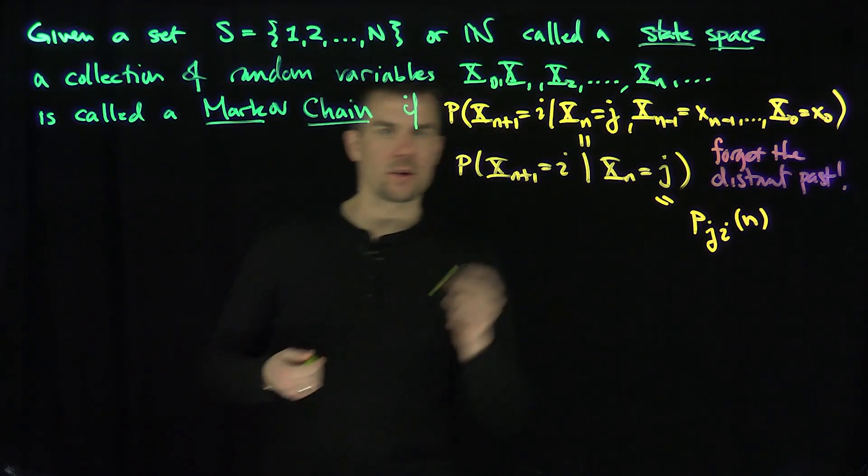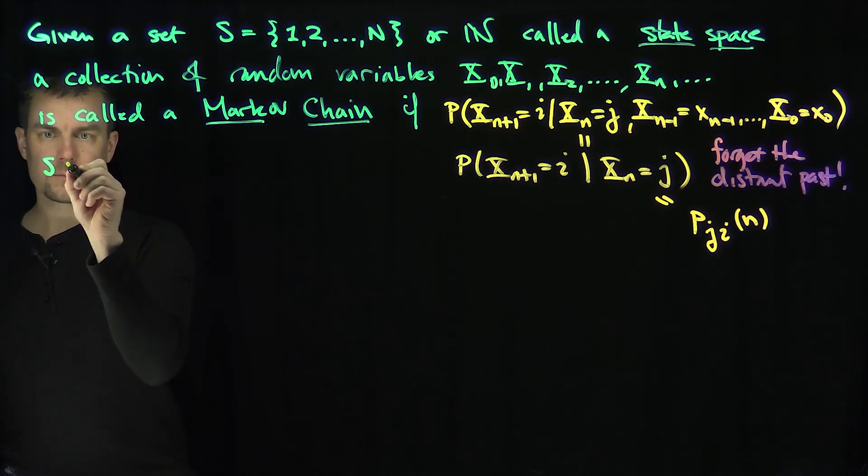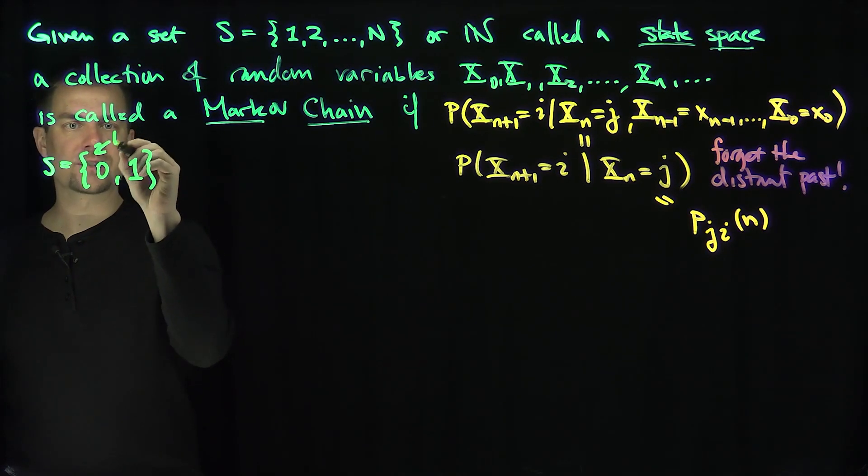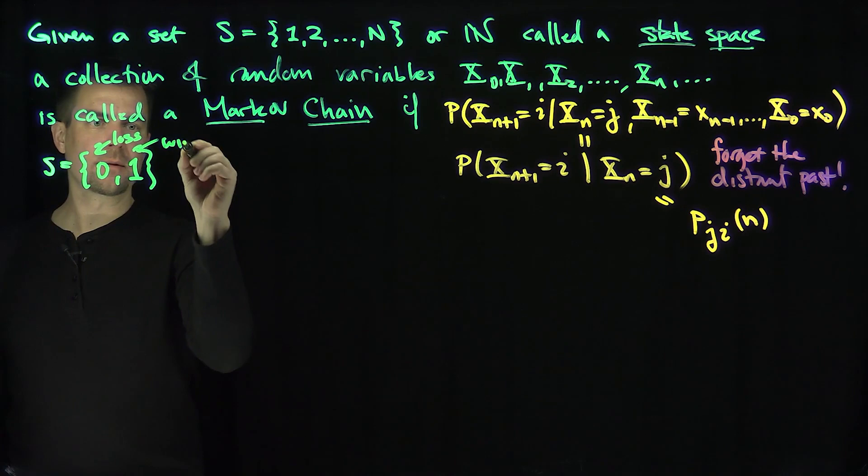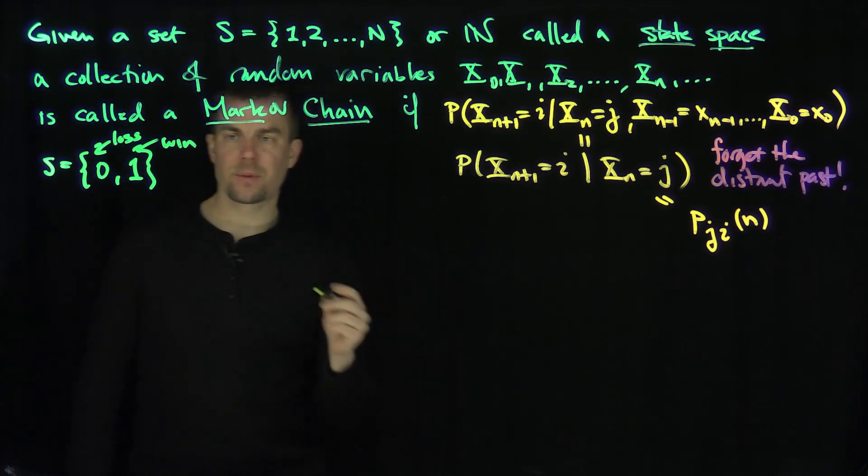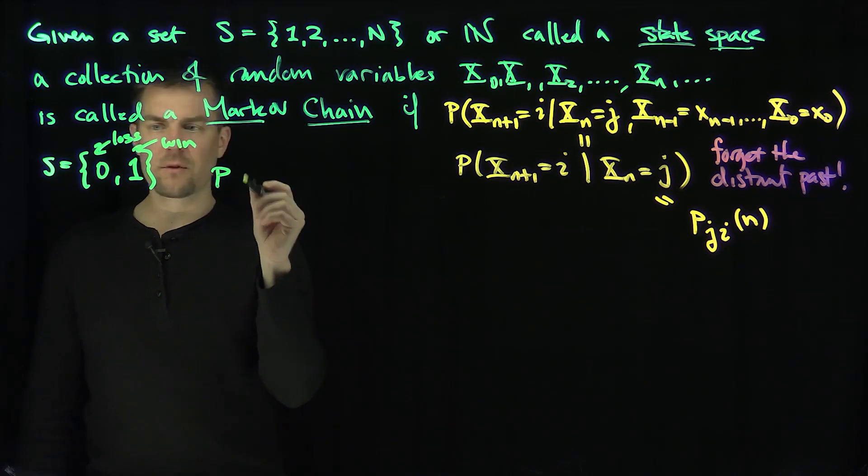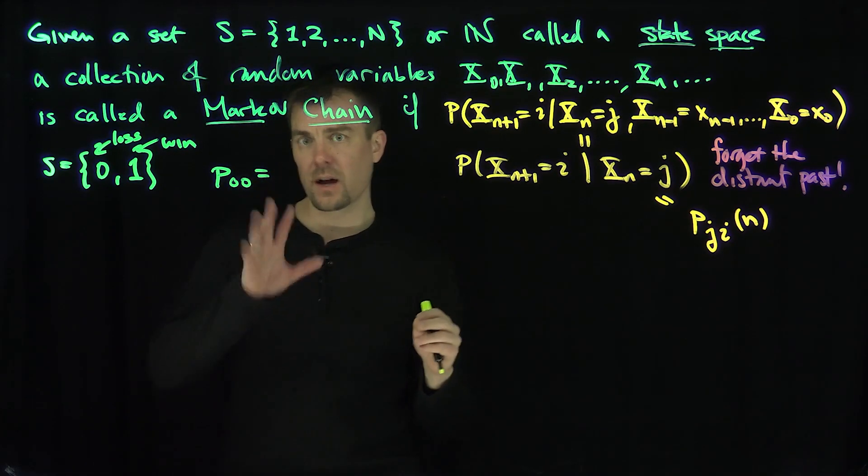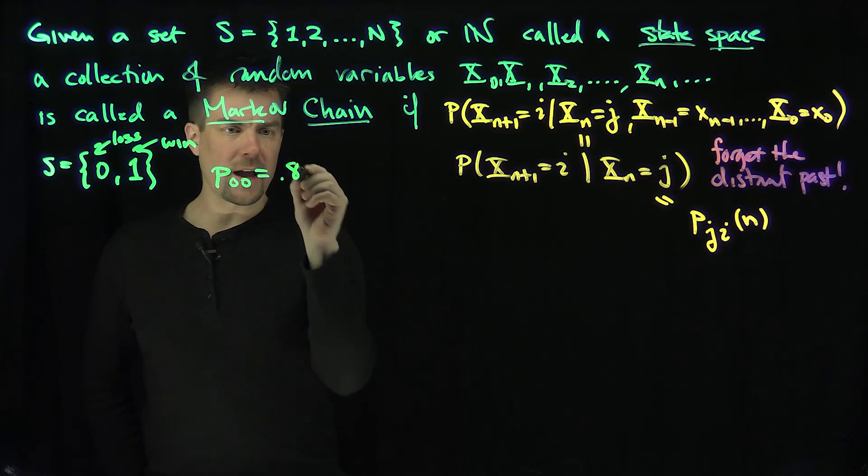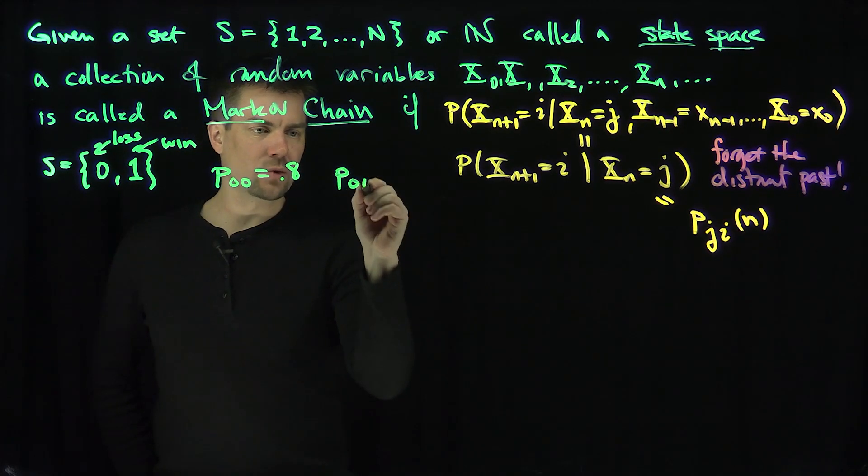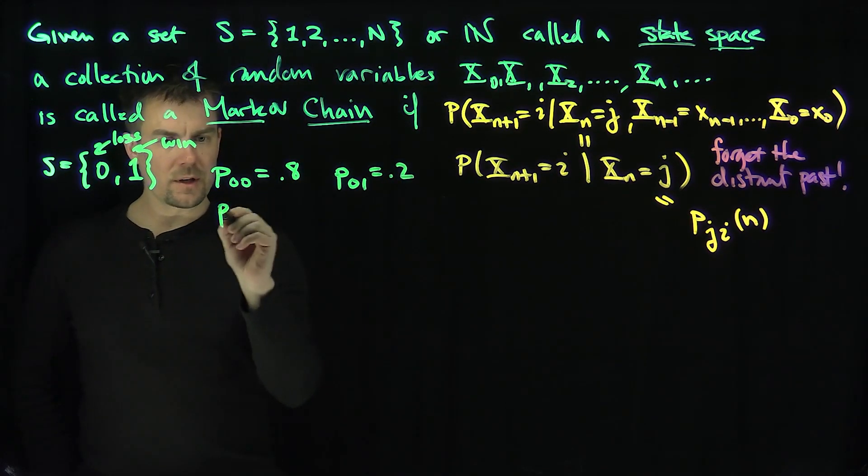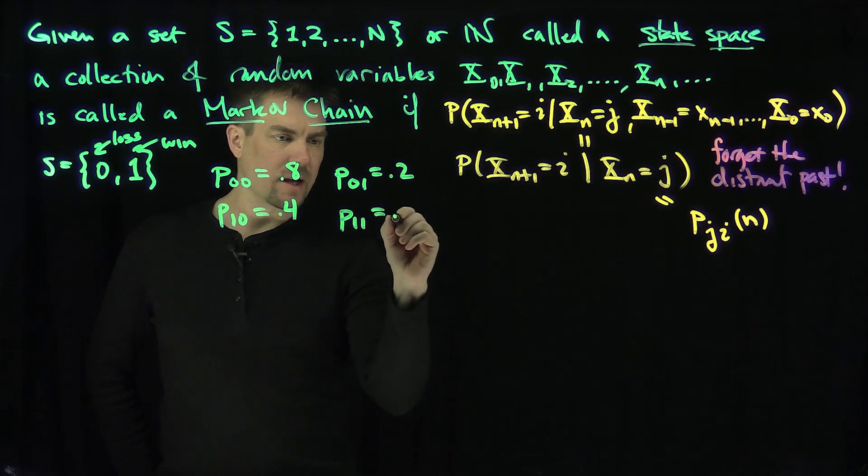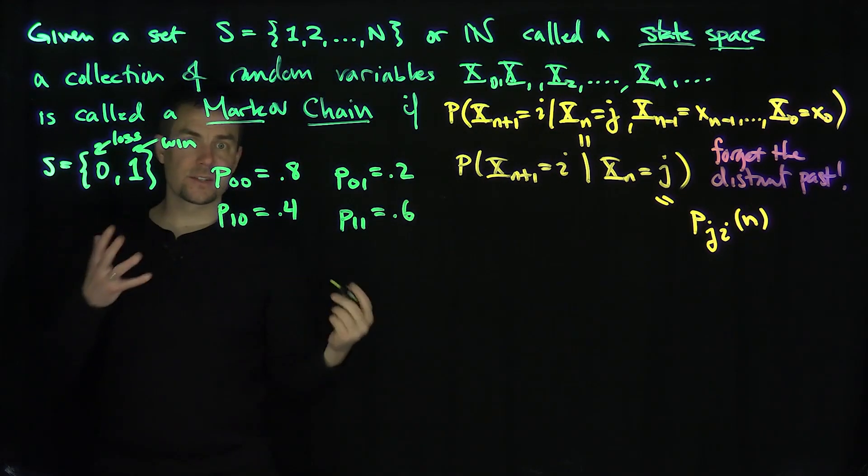So let me give an example. Let S be the state space 0 and 1, and I'm going to think of 0 as a loss and 1 as a win. The probability of going from 0 to 0, a loss to a loss, independent of time, is going to be 0.8. The probability of going from a loss to a win is 0.2. The probability of going from a win to a loss is 0.4. And the probability of going from a win to a win is 0.6. That is an example of the Markov chain.